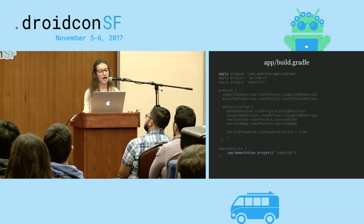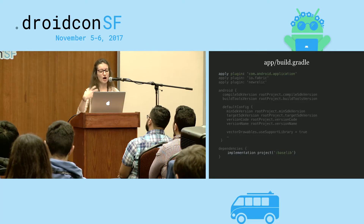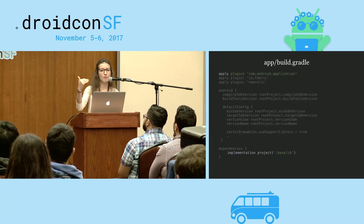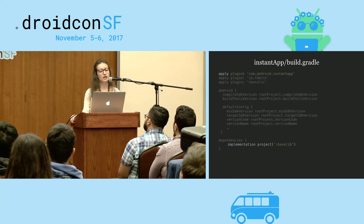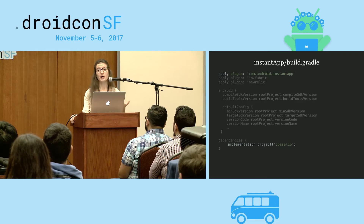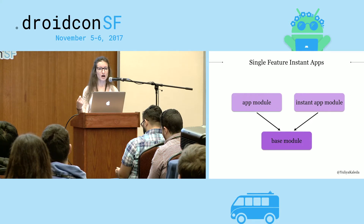The build.gradle file of the App Module uses the well-known plugin com.android.application. In the dependencies block, you don't need to specify specific dependencies anymore since they're already in the Base Module — you just use 'implementation project' to establish the connection between the App Module and the Base Module. The Instant App Module's build.gradle uses a different plugin: com.android.instantapp. In its dependencies block, you do the same thing — set a connection to the Base Module through the 'implementation project' configuration. So our application is modularized, connections are established through build.gradle files, and our Instant App is ready to go.